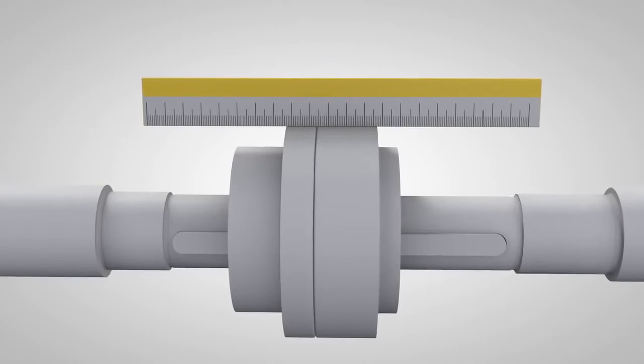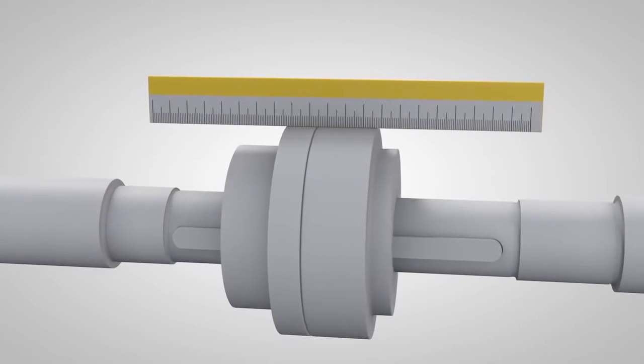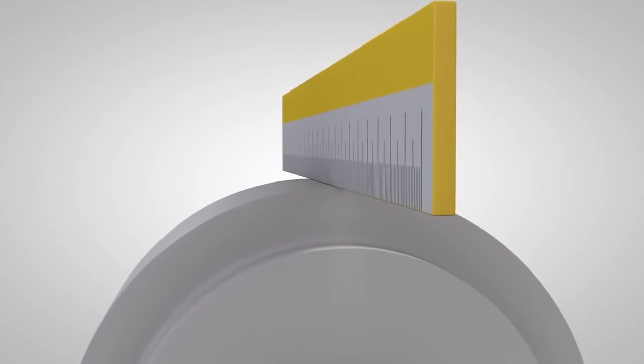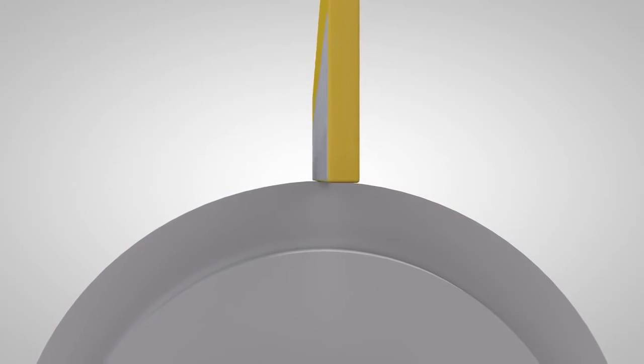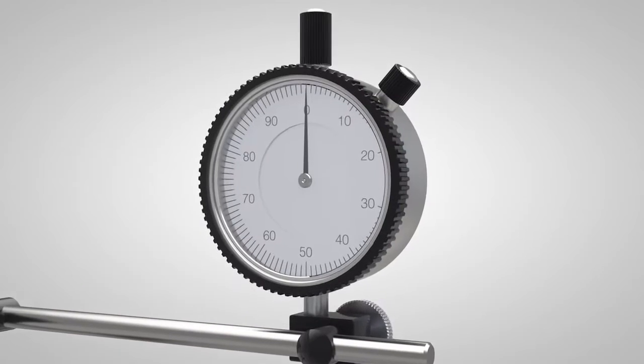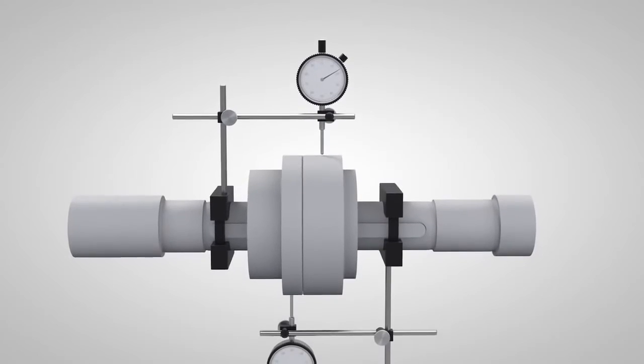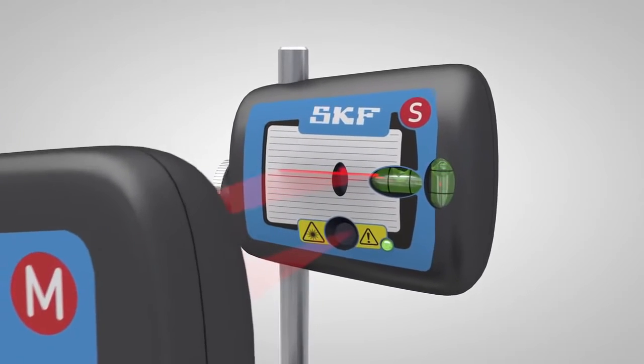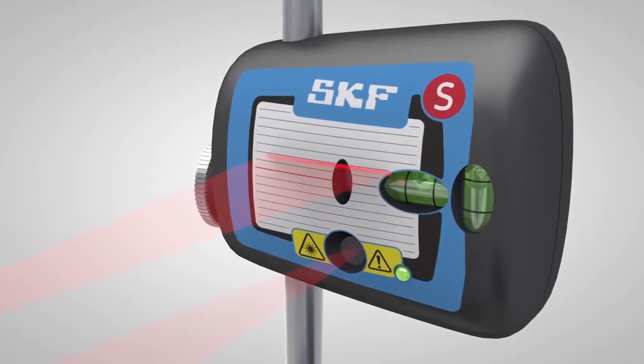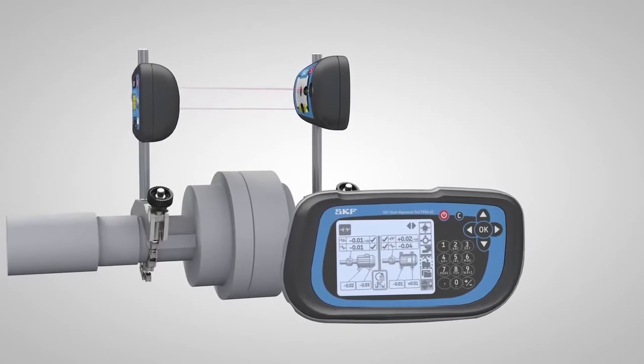Today, three alignment methods are commonly used. Straight edges or eyesight, which are fast and easy methods but not accurate. Dial gauges, which allow high accuracy but are complicated to use. And laser alignment systems, which are very accurate and easy to use but require a higher investment.